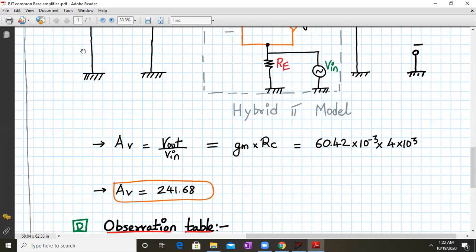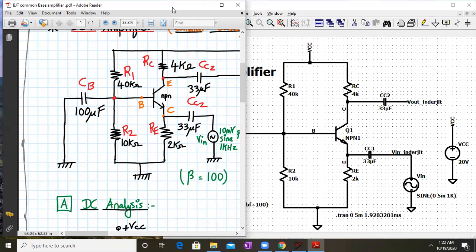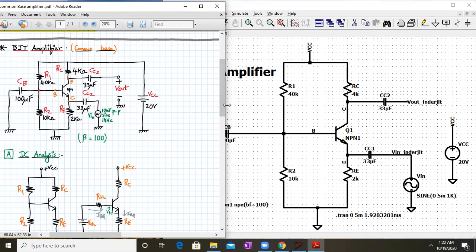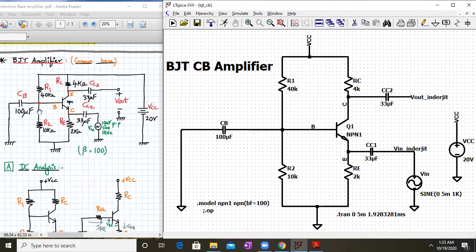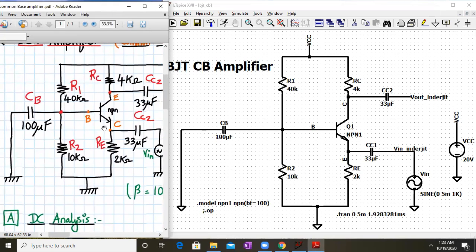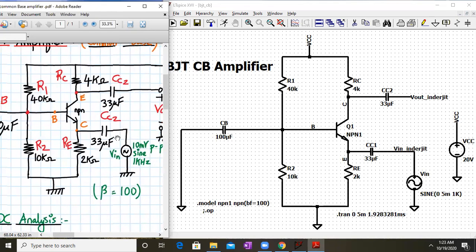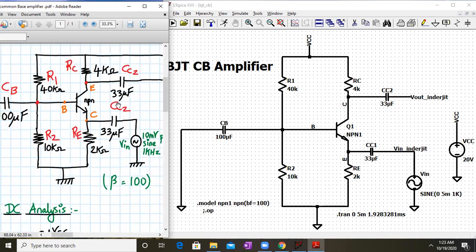So let's simulate this circuit and verify this number. Let me go back to the original diagram. I've already kept the circuit ready for your reference. So the circuit to the left-hand side and the right-hand side are almost the same. CB is 100 microfarad, R1 and R2 40 and 10K. RC is 4 kilohm, RE is 2 kilohm, CC1 and CC2 are 33 microfarad each. V in, we are applied as 10 millivolts peak to peak. And the supply voltage is 20 volts.